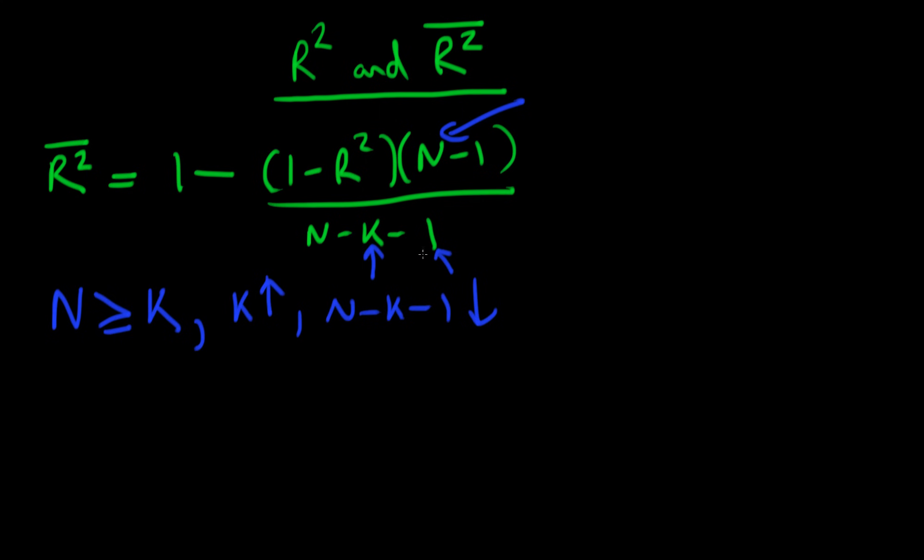If I'm dividing by a smaller and smaller number, then this second term, this parenthesized term, is going to be getting bigger and bigger, which when I take it away from 1, means that R-bar squared is going to fall.